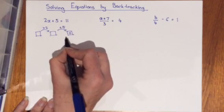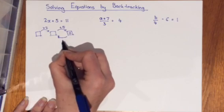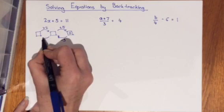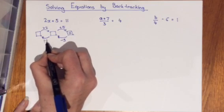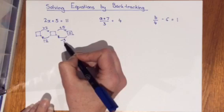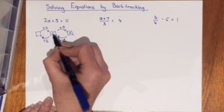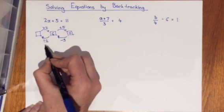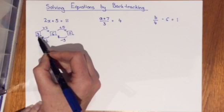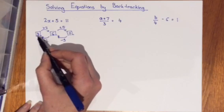The opposite of adding 5 would be subtracting 5 and the opposite of multiplying by 2 would be dividing by 2. So following this process, 11 minus 5 would give me 6 and 6 divided by 2 would give me 3. So the answer to the equation is that the x would have to be 3.